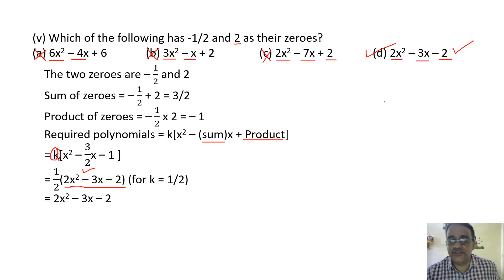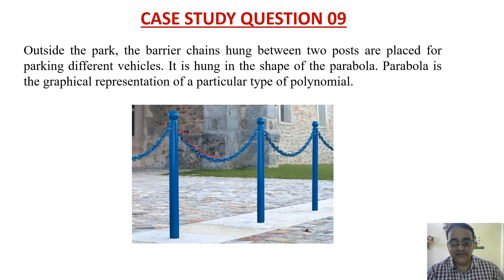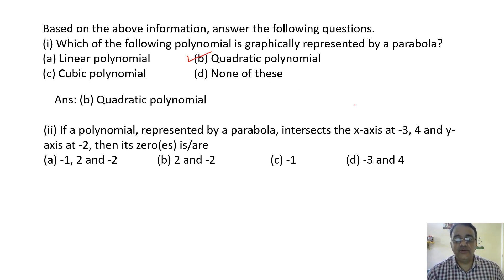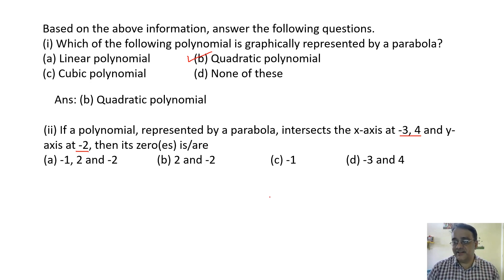Now case study question nine: Outside a park, barrier chains hung between two posts are placed for parking vehicles. They hang in the shape of a parabola. Which polynomial is graphically represented by a parabola? Quadratic polynomial. Next question: if a polynomial represented by a parabola intersects the x-axis at minus 3 and 4, the zeros are minus 3 and 4.